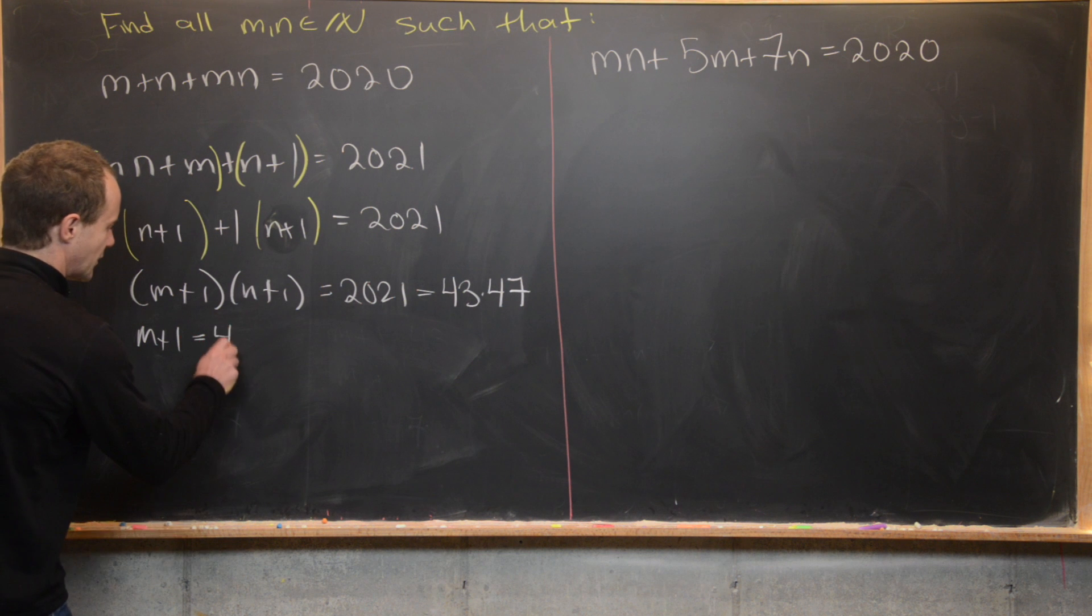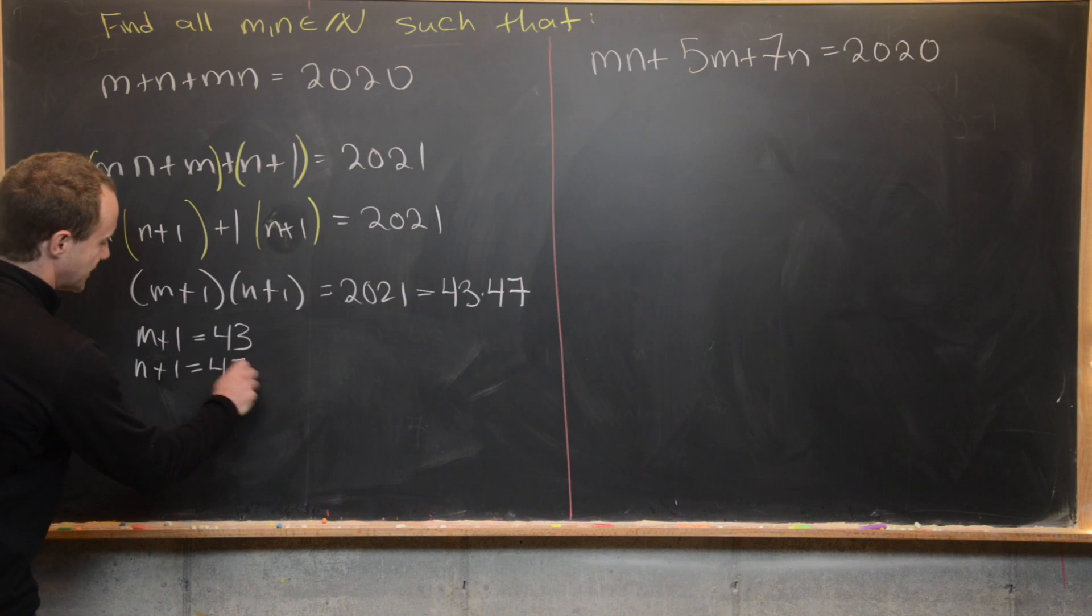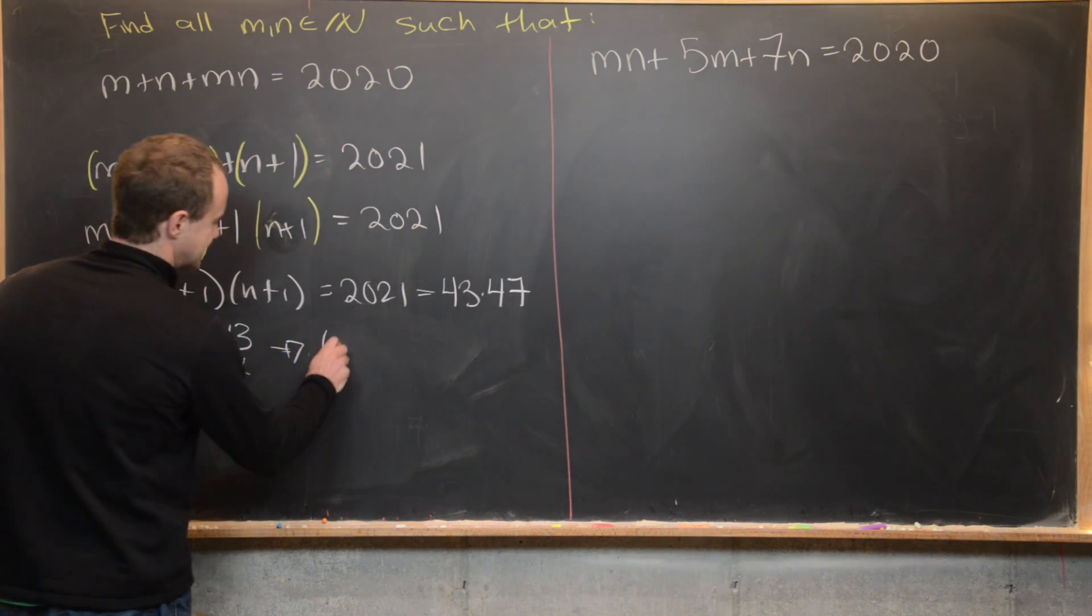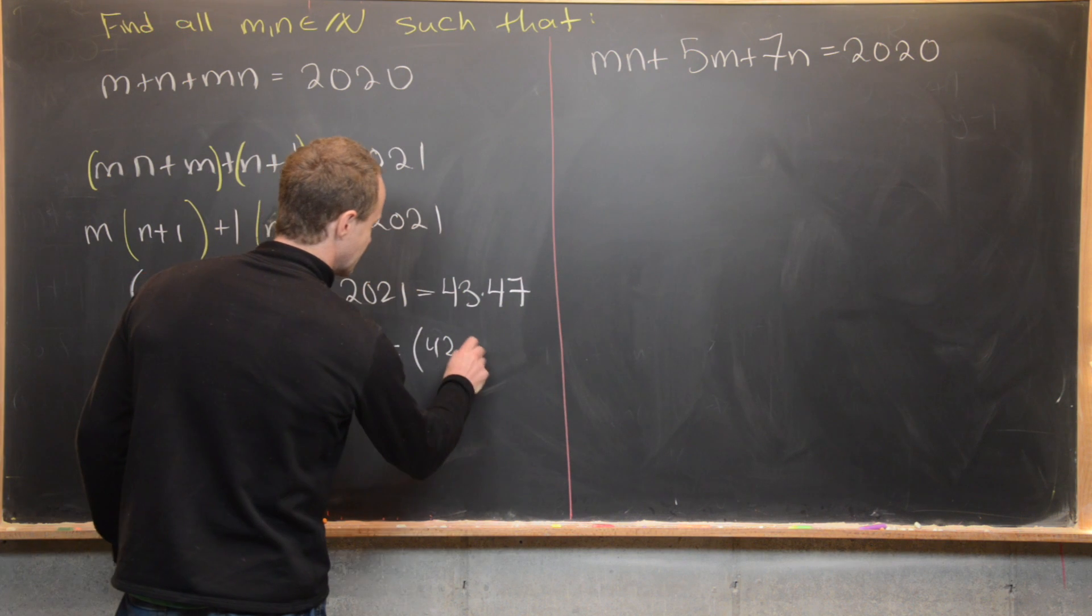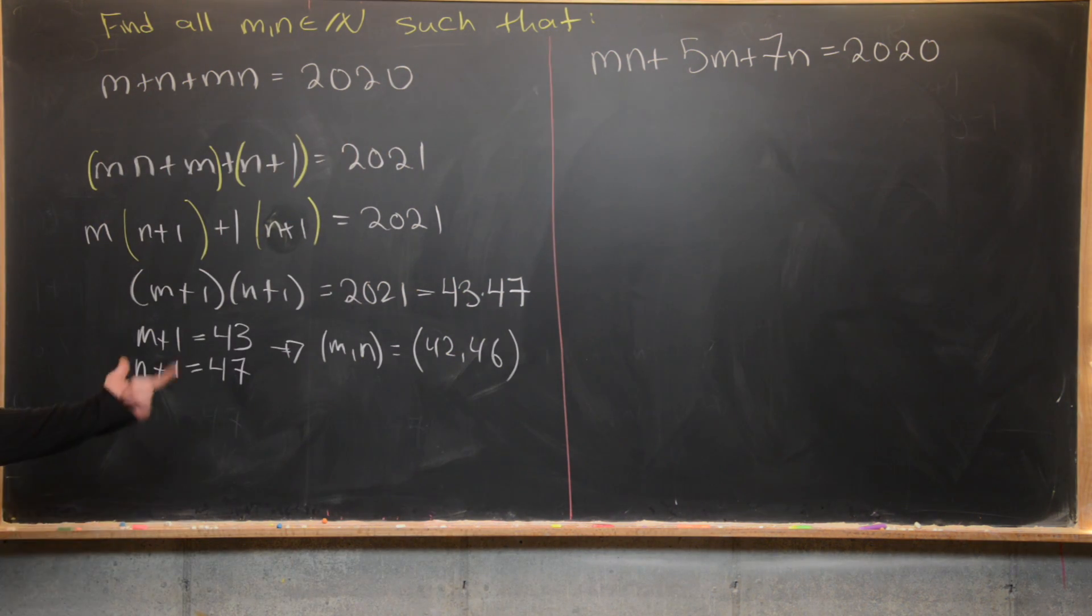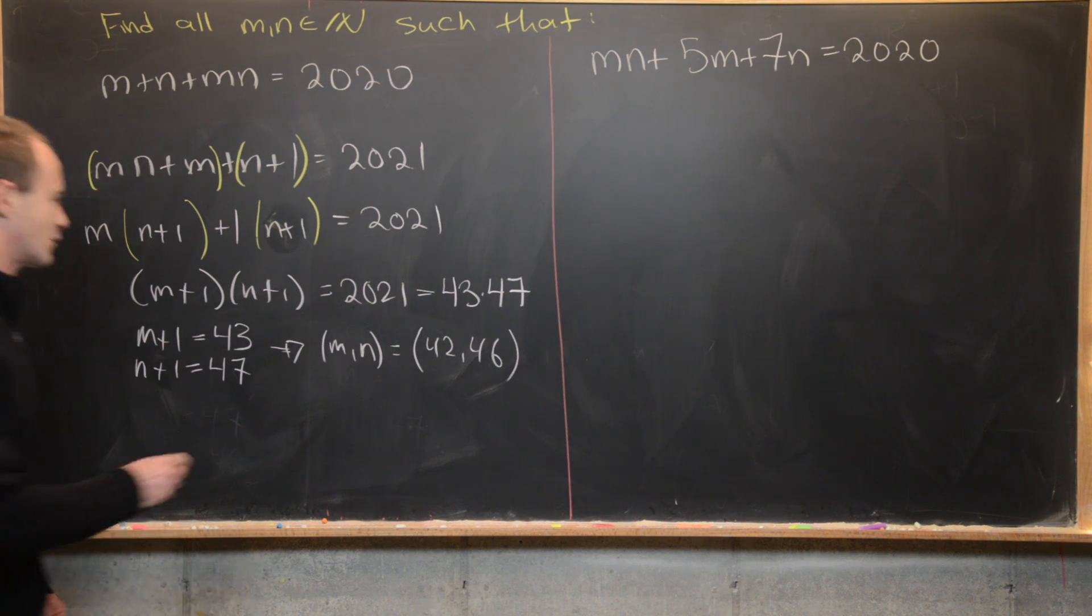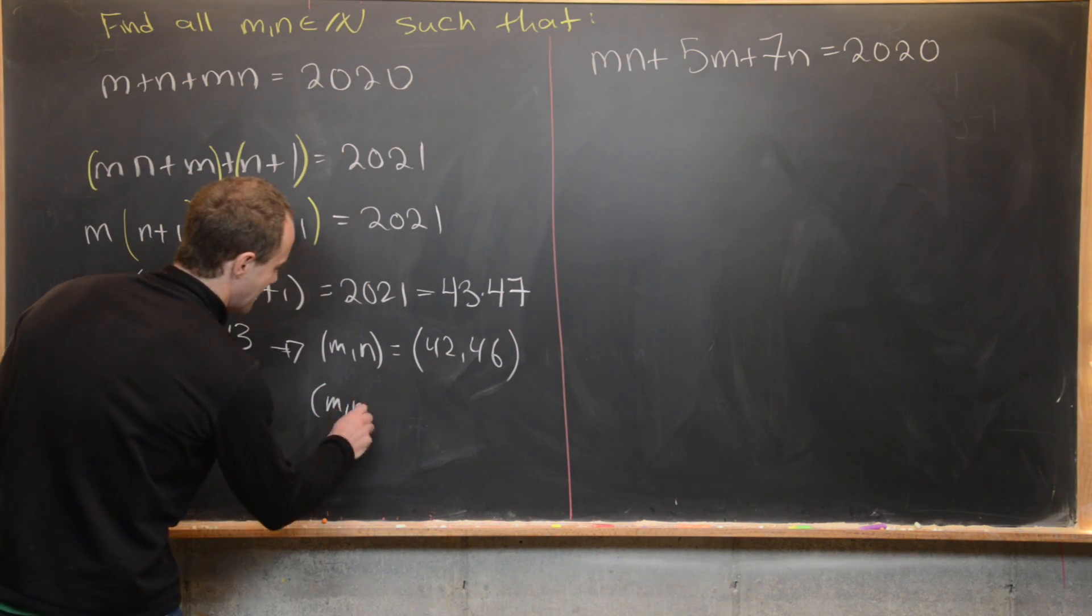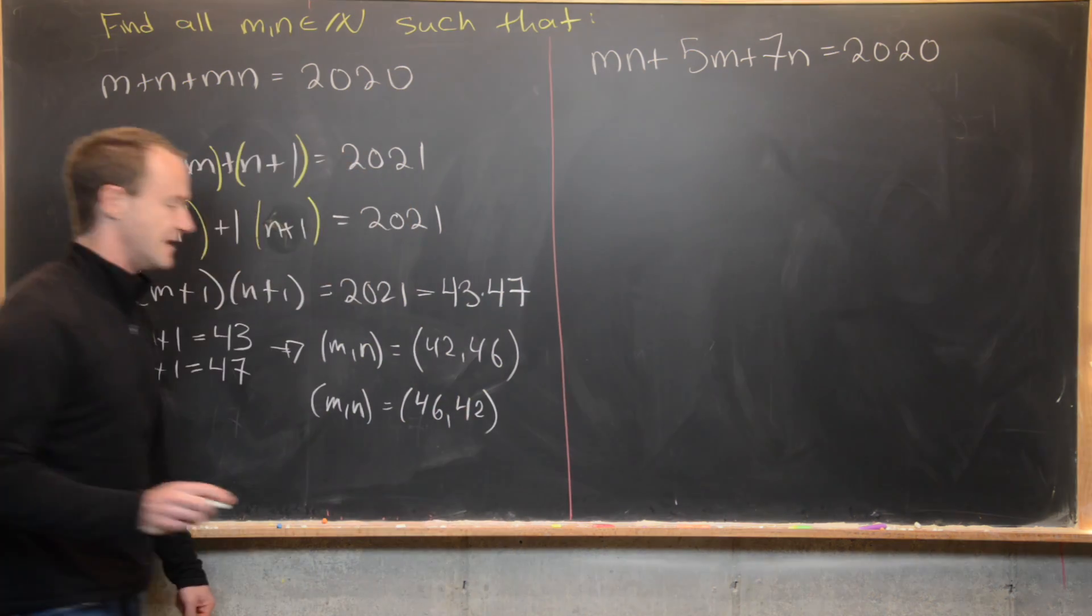So let's maybe do that. We have m plus 1 equals 43. That's one possibility. That means that n plus 1 has to be equal to 47. So that tells us that (m, n) is equal to (42, 46). We can think about it as an ordered pair. But then we also get the symmetric answer because m and n are really playing the same role here, and that would be (m, n) is equal to (46, 42). That ordered pair.